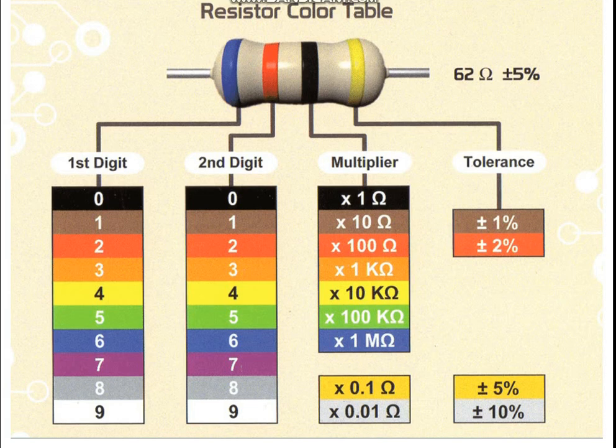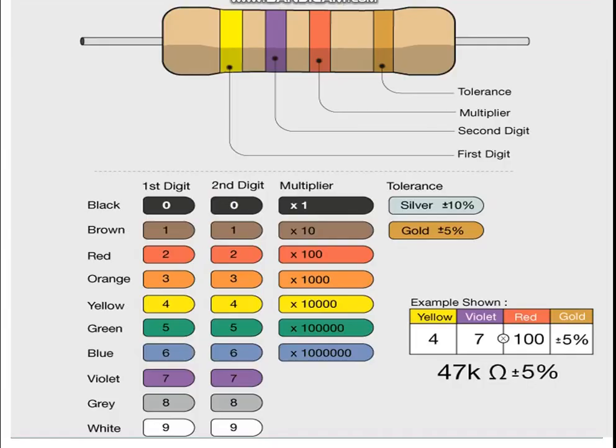For the next example, the first band is blue — blue is six. The second band is red — red is two. The third band is black — its multiplier value is ×1 ohm. So totally we get 62 ohms. The last band is gold, which has a value of ±5% tolerance. So totally we get 62 ohms ±5%.